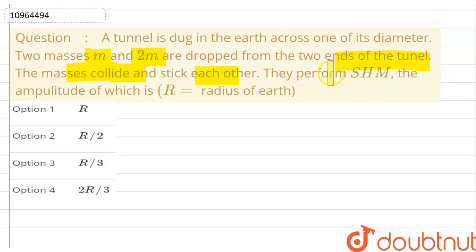We will solve this simple harmonic motion problem. We need to find the amplitude of oscillation as a fraction of the radius of the earth. Option 1 is R, option 2 is R by 2, option 3 is R by 3, option 4 is 2R by 3.